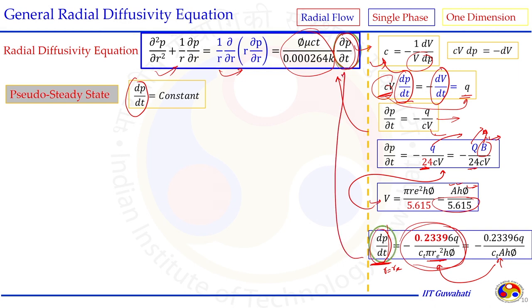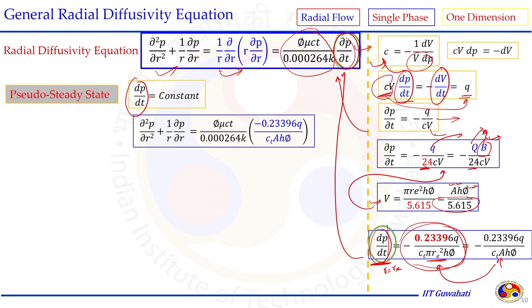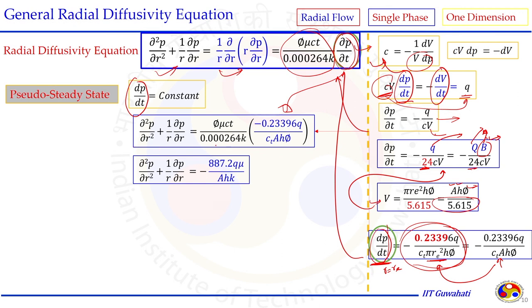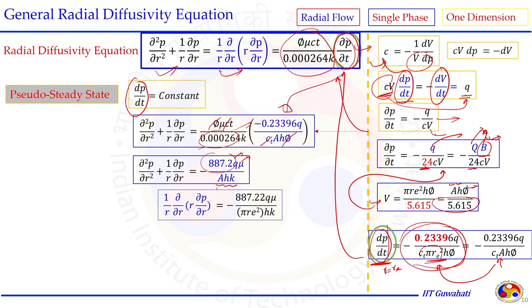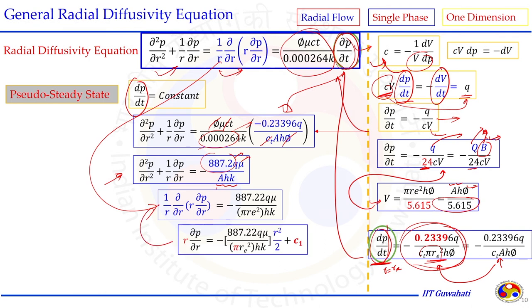Replacing this ∂p/∂t expression into the radial diffusivity equation, we perform the first integration with respect to r. The right-hand side integrates to r²/2 plus constant C₁. The boundary condition for finding C₁ is the outer boundary no-flow condition: ∂p/∂r at r = R_e equals zero. Placing this condition gives the value of C₁, and after adjustment the expression is obtained.